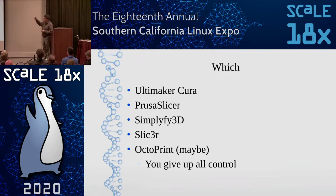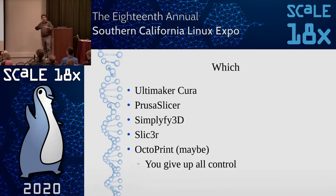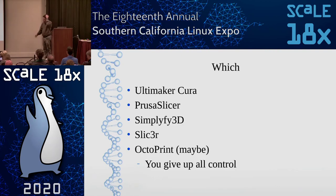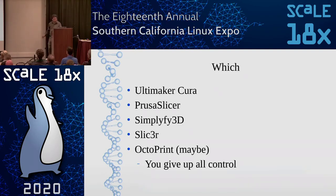Some common slicers: Ultimaker Cura and Prusa Slicer are both free. Simplify 3D is commercial but a lot of people like it. Slic3r is what Prusa Slicer was forked from. Then there's Octoprint—you can run it on a Raspberry Pi to control your 3D printer. Instead of copying to an SD card and walking to the printer, Octoprint gives you a web interface to send files, watch via webcam, and control everything remotely. It can also take the full STL and slice it for you—but if it guesses wrong on settings, you get a bad print, so be careful.